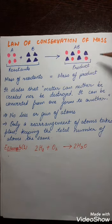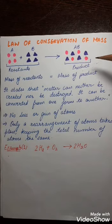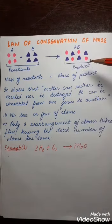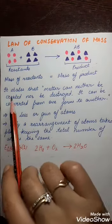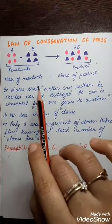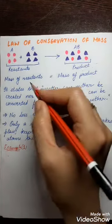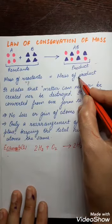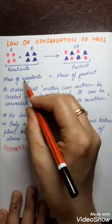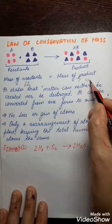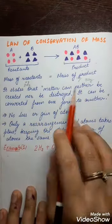In the products there is simply a rearrangement of the atoms to give a new product, keeping the total number of atoms the same. So we can say the mass of the reactants equals the mass of the products. If the mass of the reactants is X grams, then the mass of the products will also be X grams. For example, if the mass of the reactants is 20 grams, the mass of the products will also be 20 grams — the mass is conserved.